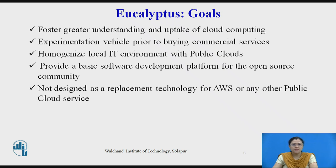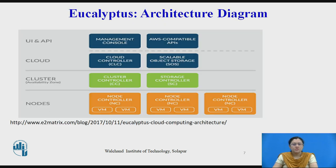Eucalyptus is not designed as a replacement technology for AWS or any other public cloud services. The architecture diagram of Eucalyptus shows different components including a UI, API, cloud, cluster, and node. The details will be covered in the next slide.